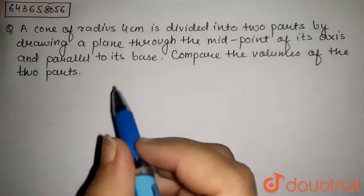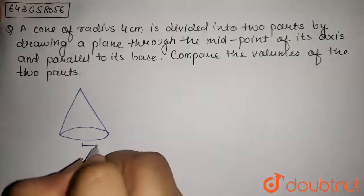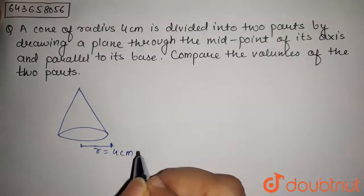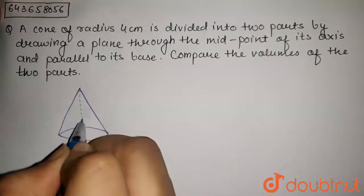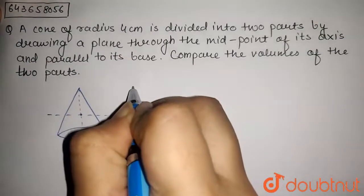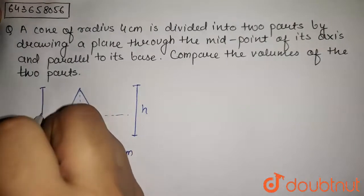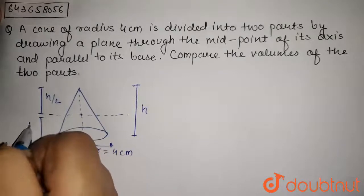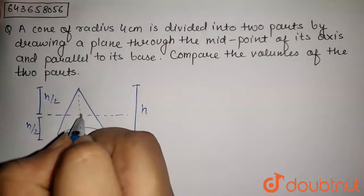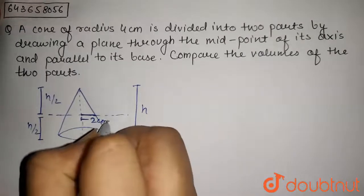We are given a cone of radius 4 cm, so this length is the radius which equals 4 cm. The cone is divided into two parts by drawing a plane through the midpoint of its axis. If the total height of the cone is h, then each half has height h/2. When divided at this midpoint, the radius of the smaller cone at that cross-section will be 2 cm.